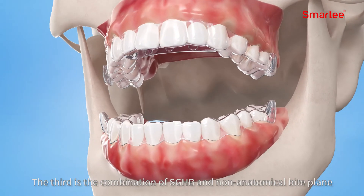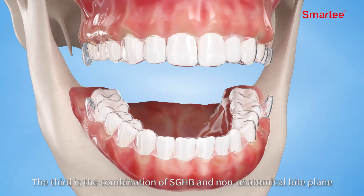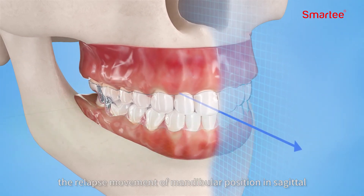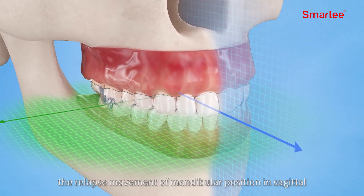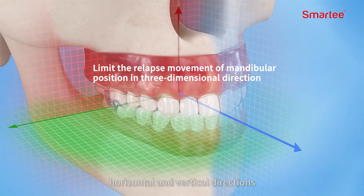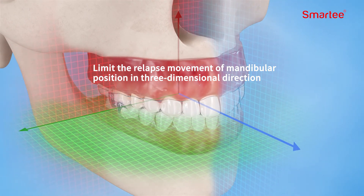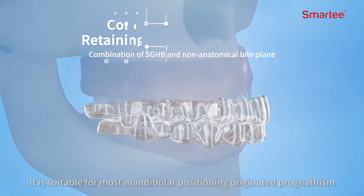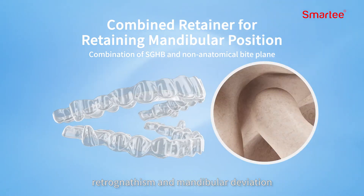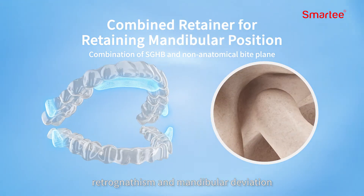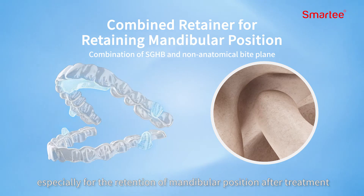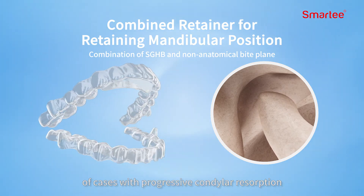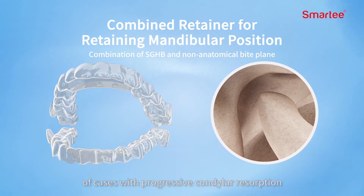The third form is the combination of SGHB and non-anatomical biplane. Its mechanism is to limit the relapse movement of mandibular position in sagittal, horizontal, and vertical directions. It is suitable for most mandibular positioning originated prognathism, retrognathism, and mandibular deviation, especially for the retention of mandibular position after treatment of cases with progressive condylar resorption.